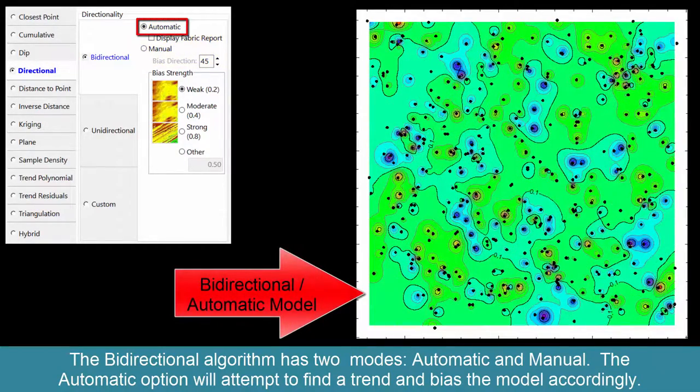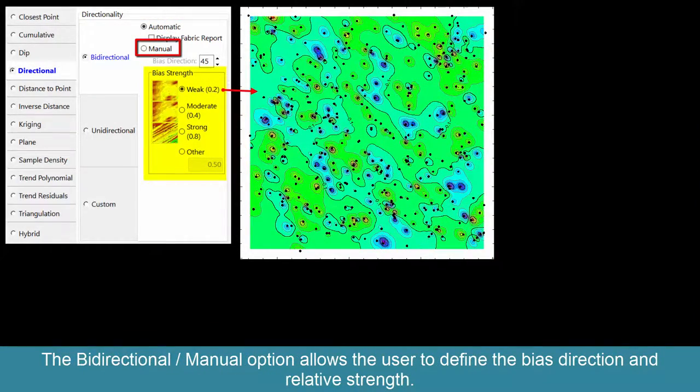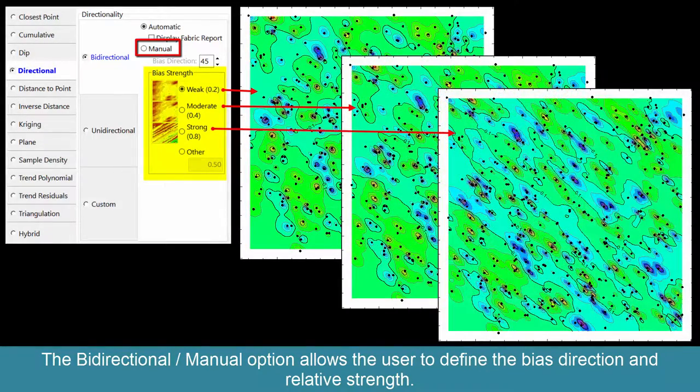The automatic option will attempt to find a trend and bias the model accordingly. The bidirectional manual option allows the user to define the bias direction and relative strength.